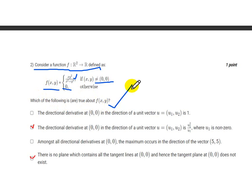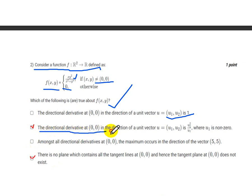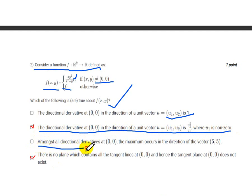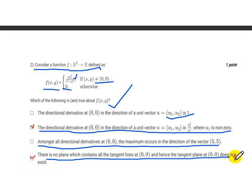The options are: (1) the directional derivative at (0,0) in the direction of unit vector u equals u₁ + u₂; (2) the directional derivative equals u₂² / u₁ where u₁ ≠ 0; (3) the maximum directional derivative occurs in direction (5,5); (4) there is no tangent plane at (0,0).